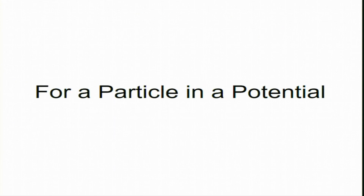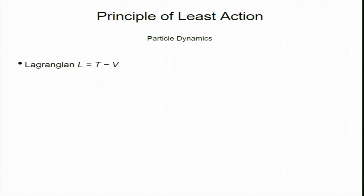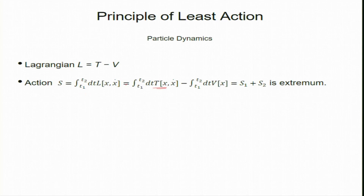Now let us look at a particle in a potential: the principle of least action. We define the Lagrangian L = T − V, and the action S = ∫ L dt from t₁ to t₂. The principle of least action states that the particle chooses the path for which the action is an extremum — normally a minimum, though it could be a maximum.